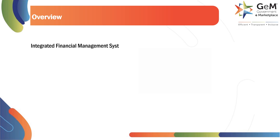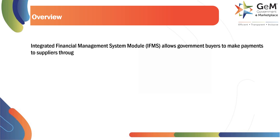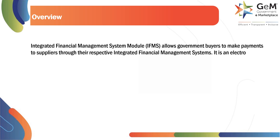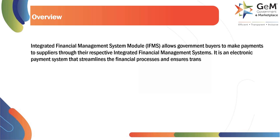IFMS allows government buyers to make payments to suppliers through their respective Integrated Financial Management Systems. It is an electronic payment system that streamlines the financial processes and ensures transparency in government procurement.